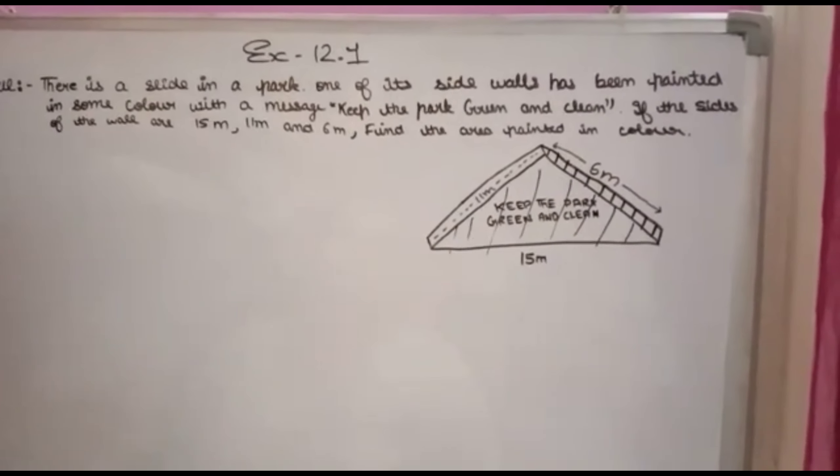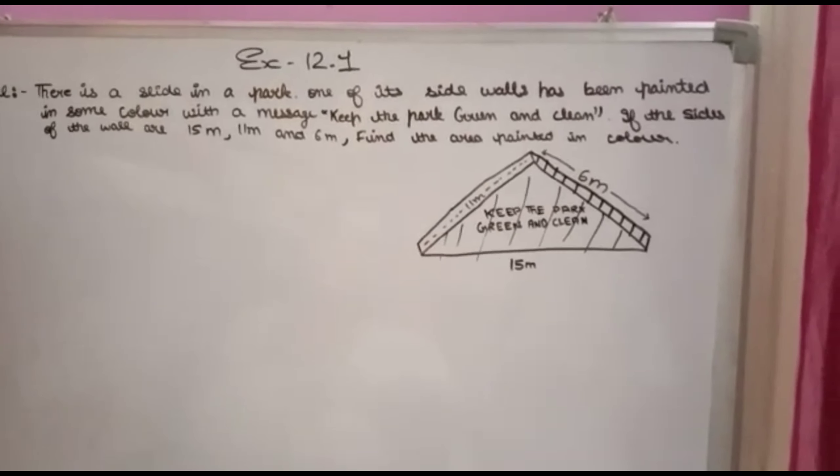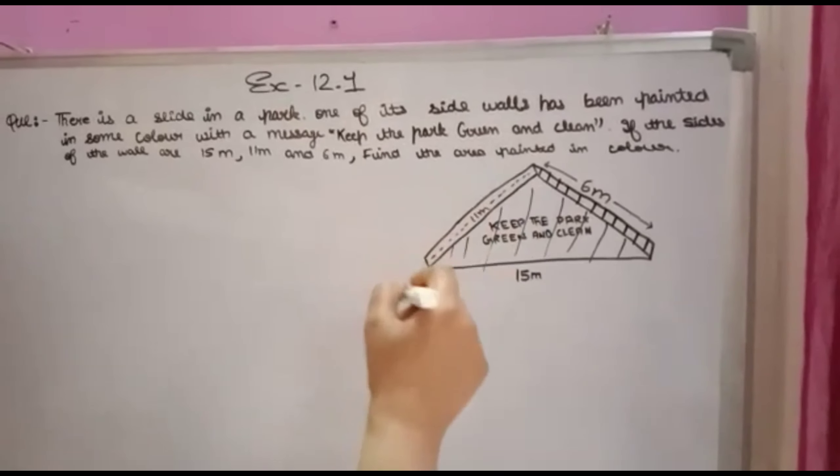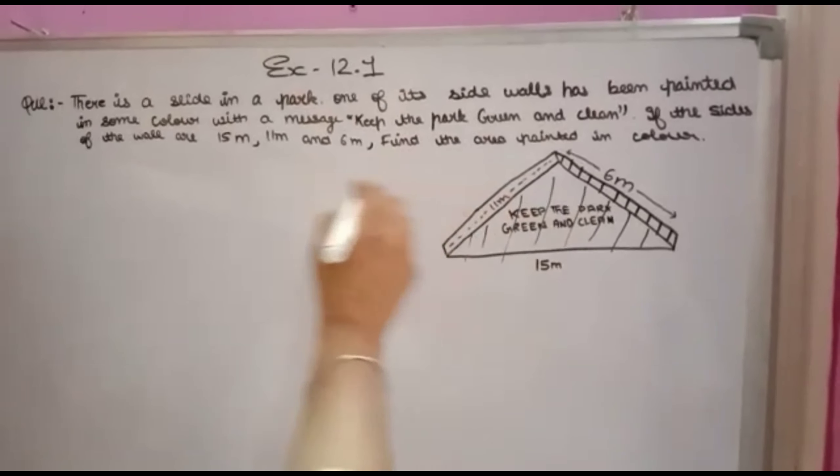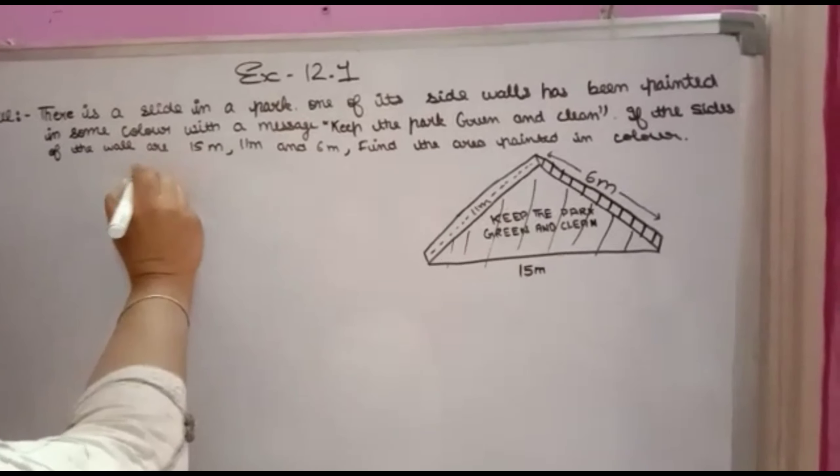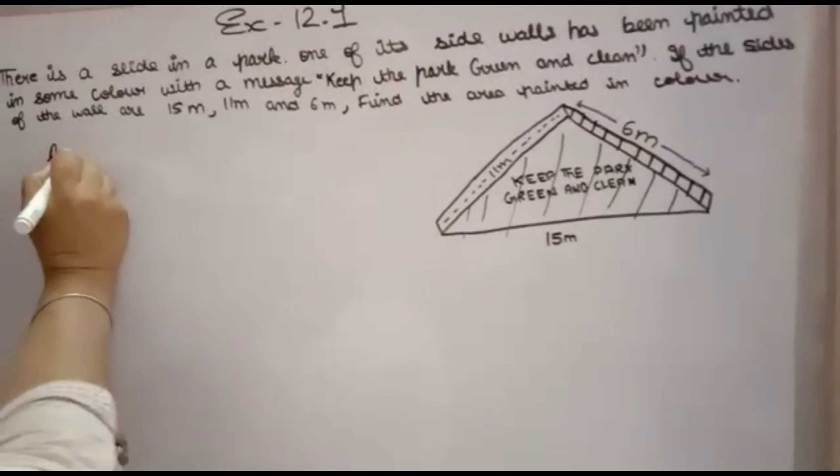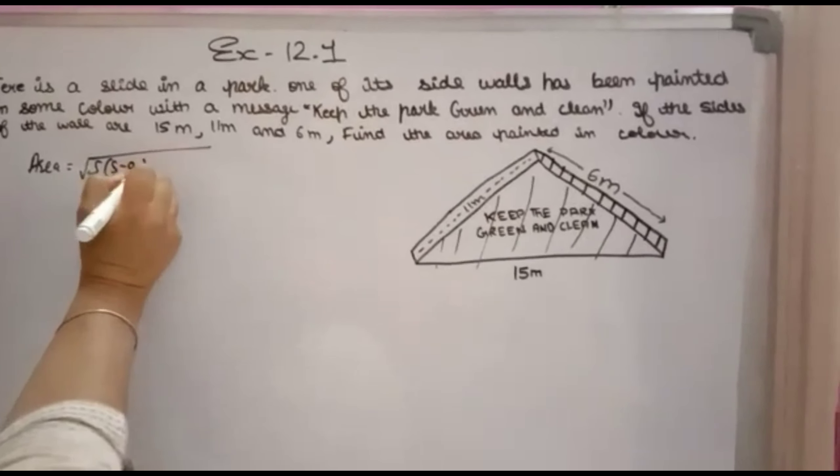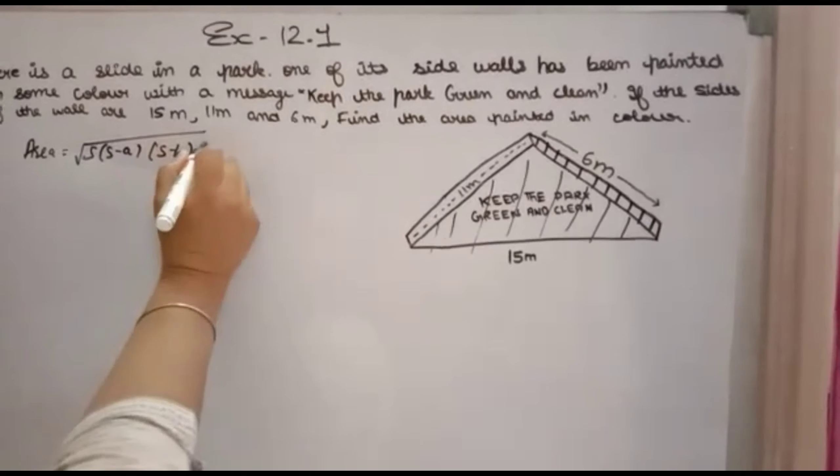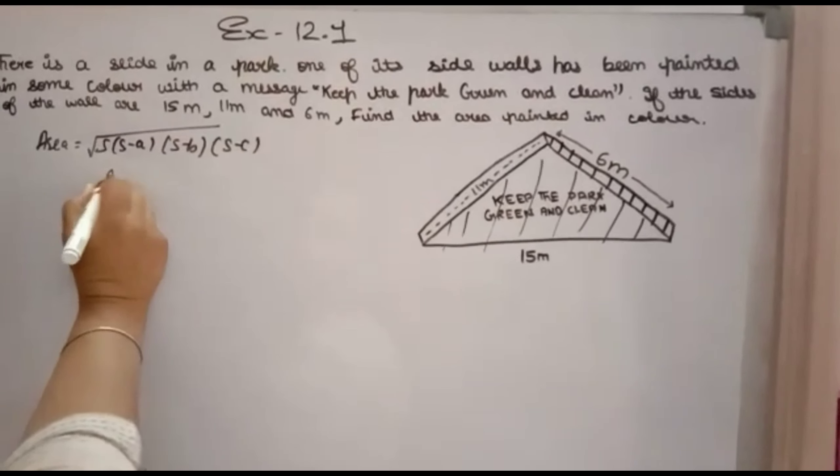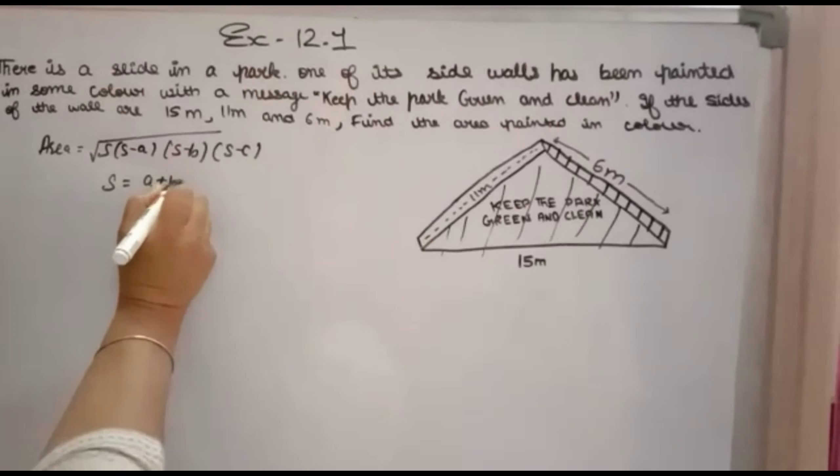The wall of the slide will be in the form of a triangle. Whenever three sides of a triangle are given and you have to find area, use Heron's formula. Heron's formula is: area = √[s(s-a)(s-b)(s-c)] where s is the semi-perimeter, that is (a+b+c)/2.